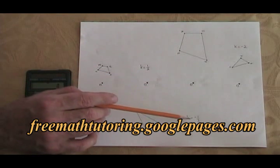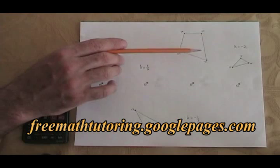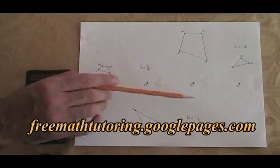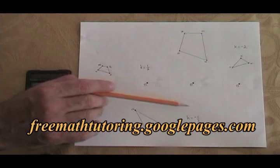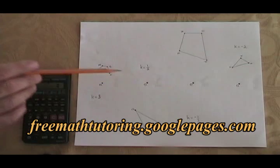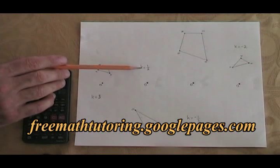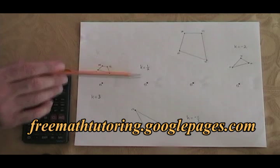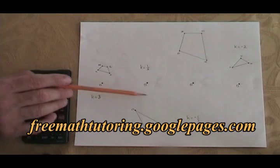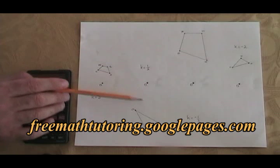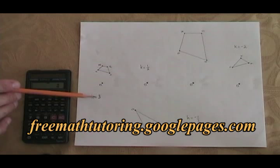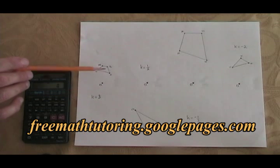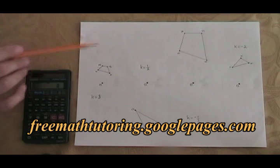In this one, k equals negative one-third, so the copy of this shape is going to end up over here, on the other side of the zero dot. In this one, k equals one-half — it's positive, which means the copy is going to land on the same side of the zero dot as the original. And over here, k equals three — it's positive, so the copy is going to land on the same side of the origin.